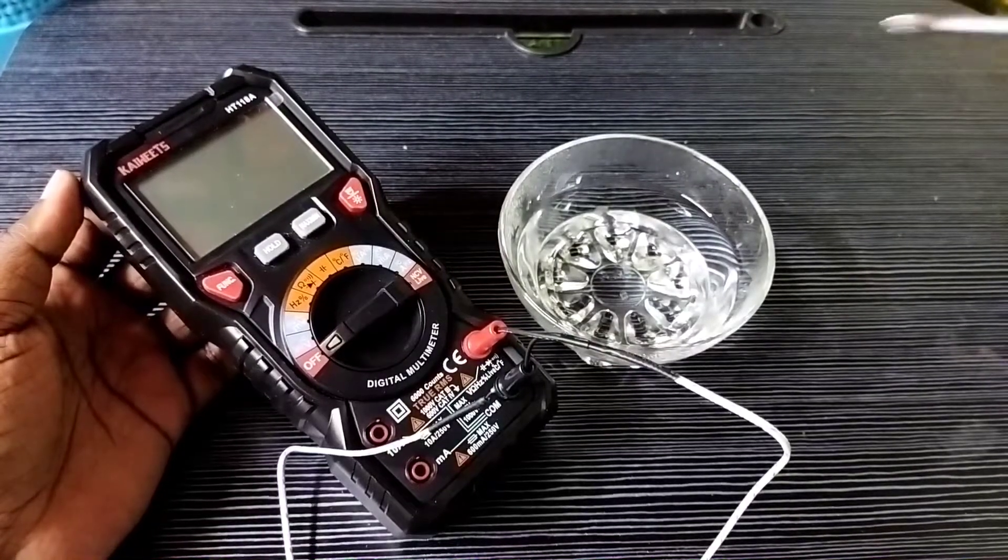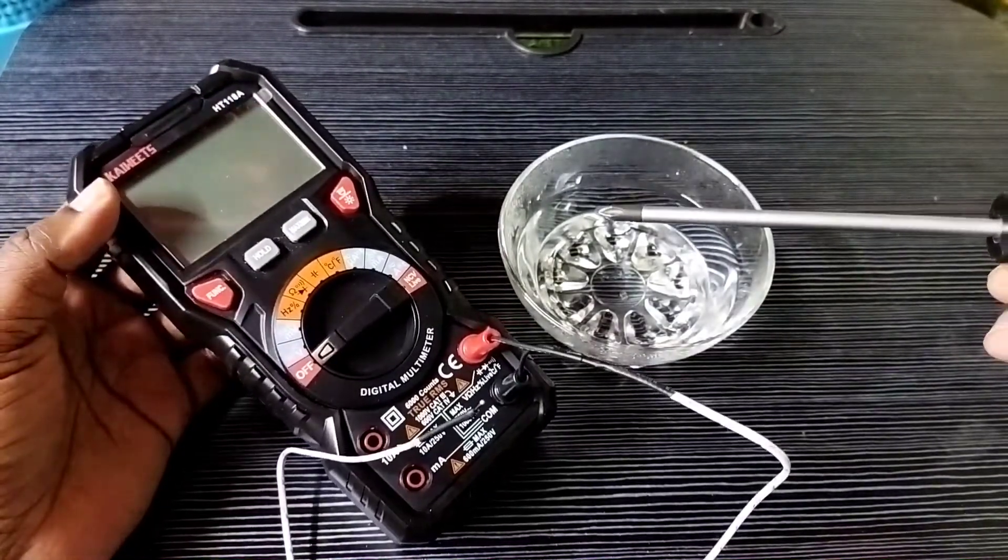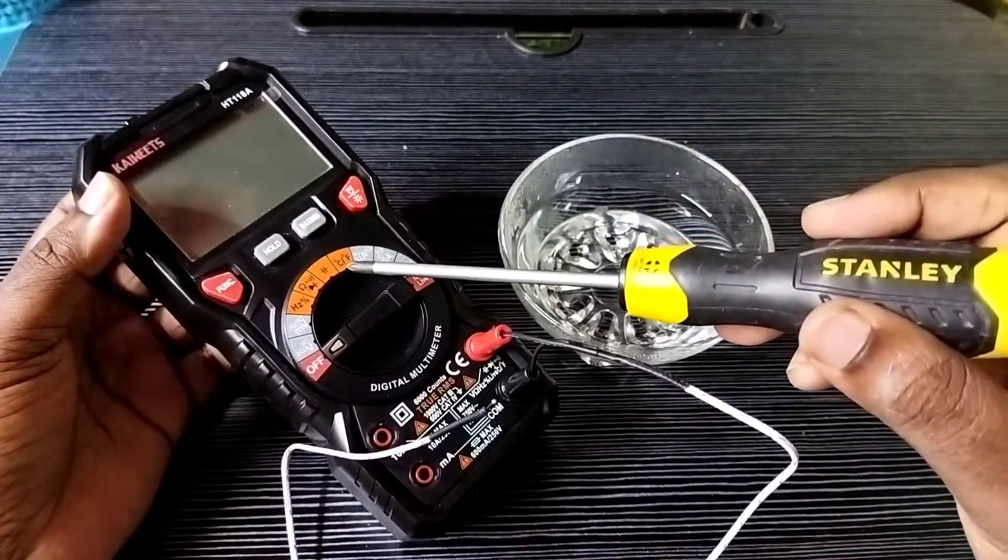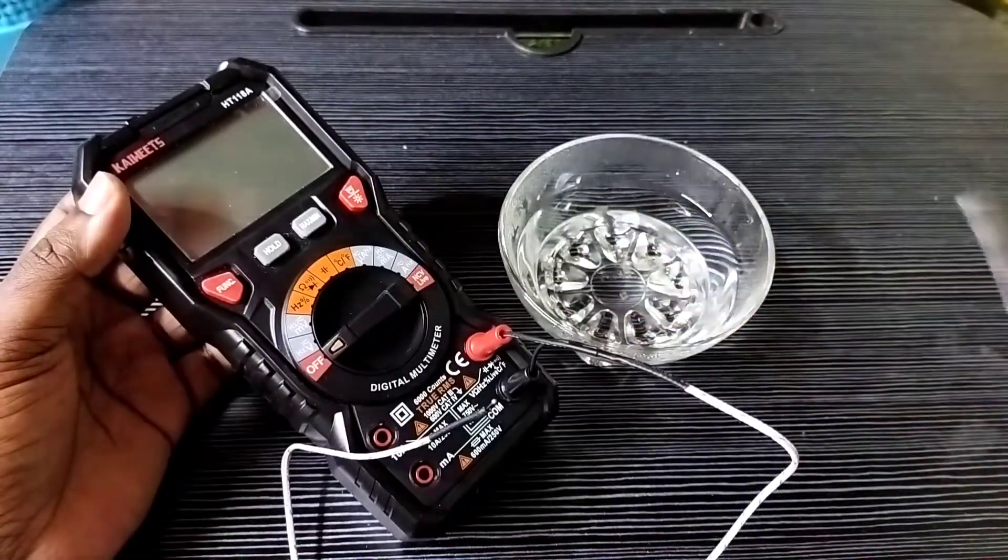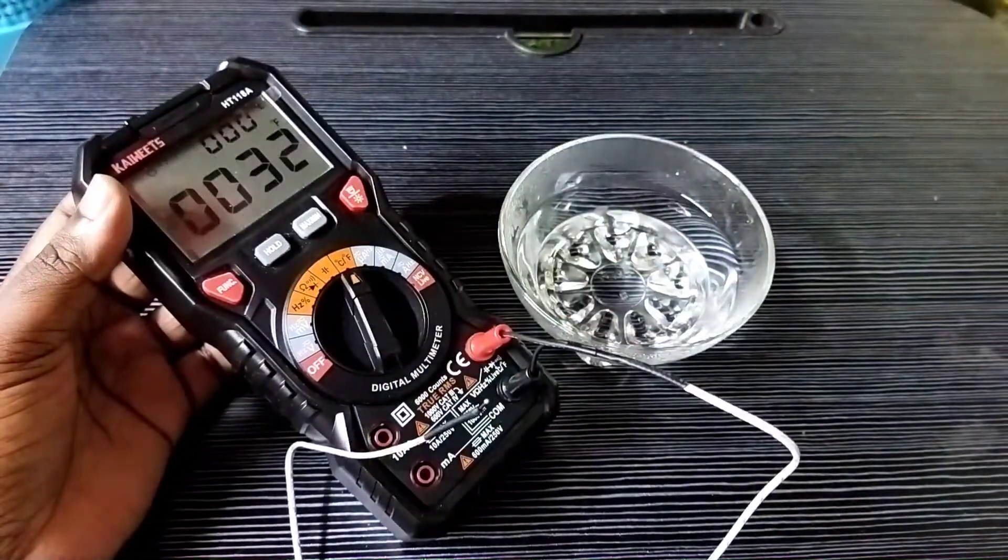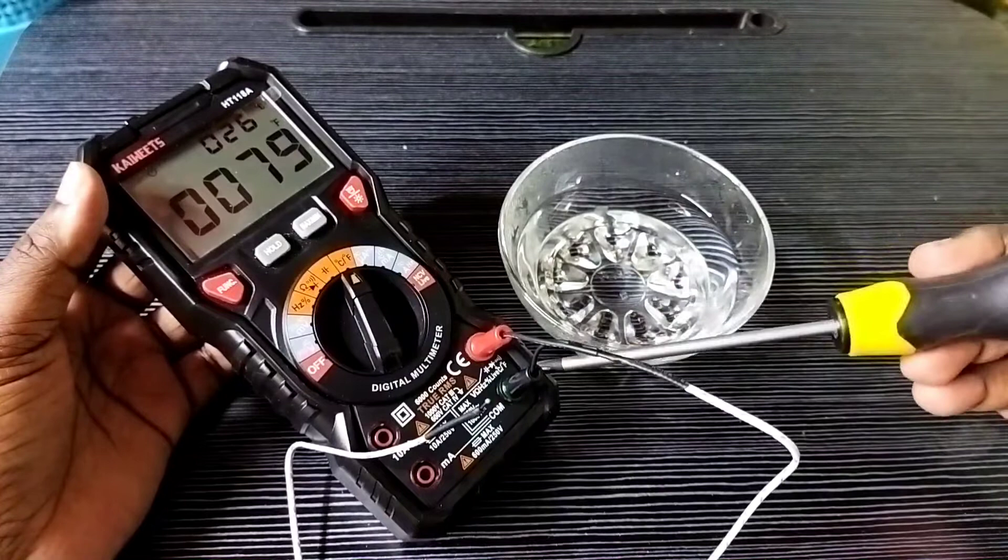Hi friends, this video shows how to measure temperature using a digital multimeter. Here you can see degree Celsius and degree Fahrenheit options. We need to select that option using this rotary switch.